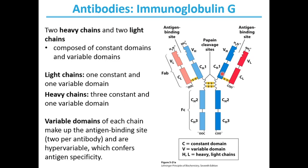If you look closely, this structure resembles the letter Y. The variable domains of each chain make up the antigen binding site — two per antibody — and are hypervariable, which confers antigen specificity. The antigen binds on one arm and on the other arm, giving two antigen molecules per antibody.